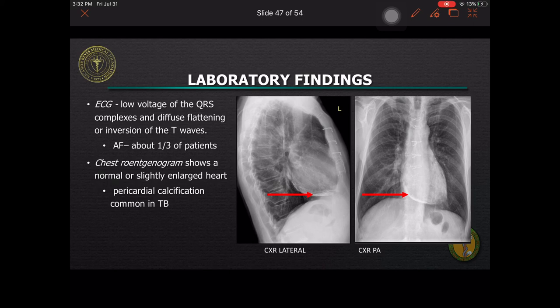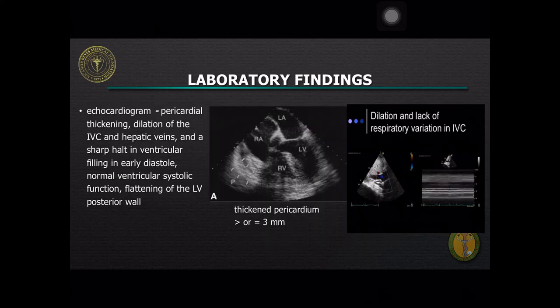The chest x-ray shows a normal or slightly enlarged heart and sometimes pericardial calcification is seen, most commonly noted in patients with TB. The echocardiogram shows pericardial thickening, dilation of the inferior vena cava and hepatic veins, and a sharp halt in ventricular filling in early diastole, with normal ventricular systolic function. There is flattening of the left ventricular posterior wall during diastole.